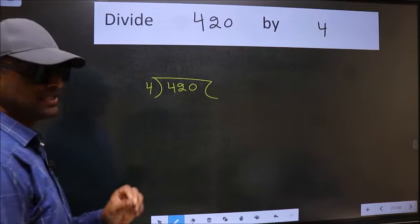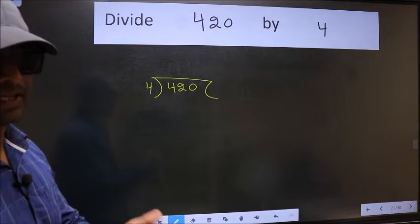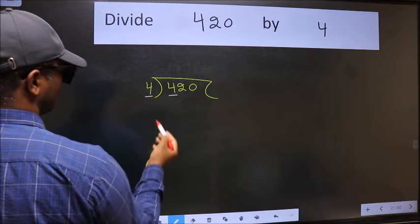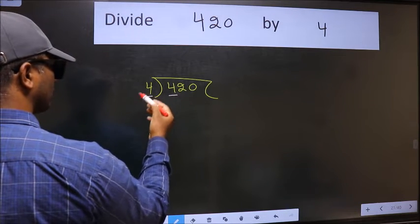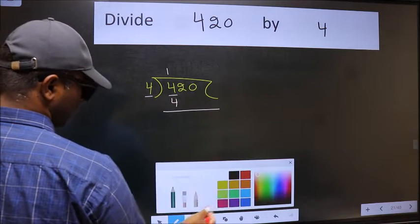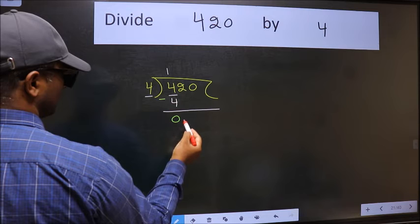This is your step 1. Next. Here we have 4. Here also 4. When do we get 4 in 4 table? 4 once, 4. Now we should subtract. We get 0.